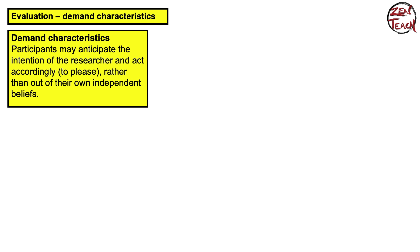Demand characteristics is another issue. It basically refers to participants anticipating the intention of the researcher — figuring out what the aim of the study is and then acting accordingly. Imagine you participate in a research study, you kind of like the researcher, you want to help them out, and you figure out what they want. So you change your behavior and your answers to fit what you think the researcher is investigating. That will change your results — you're not measuring the true, unbiased answer, but what participants think you want from them. This reduces the quality of your research.